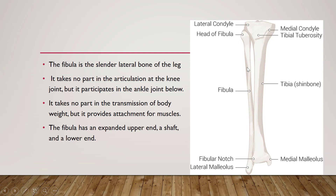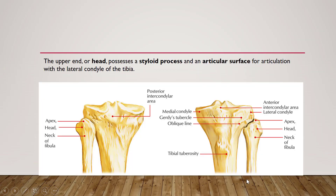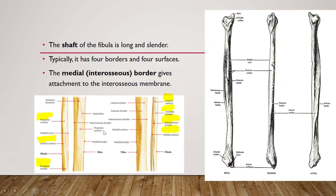The fibula has an expanded upper end, a shaft, and a lower end. The upper end, or the head of the fibula, possesses a styloid process — also called the apex. It has an articular surface for articulation with the lateral condyle of the tibia. The tibia is the medial bone and the fibula is the lateral bone.